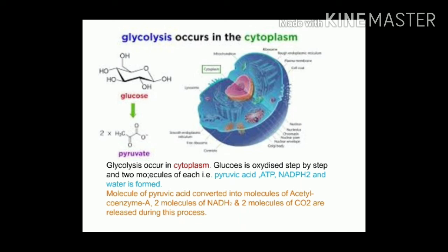In the third step, the electron transfer reaction produces ATP, NADH2 and water. The molecules of pyruvic acid formed in this process are then converted into molecules of acetyl coenzyme A. Two molecules of NADH2 and two molecules of CO2 are released during this process.